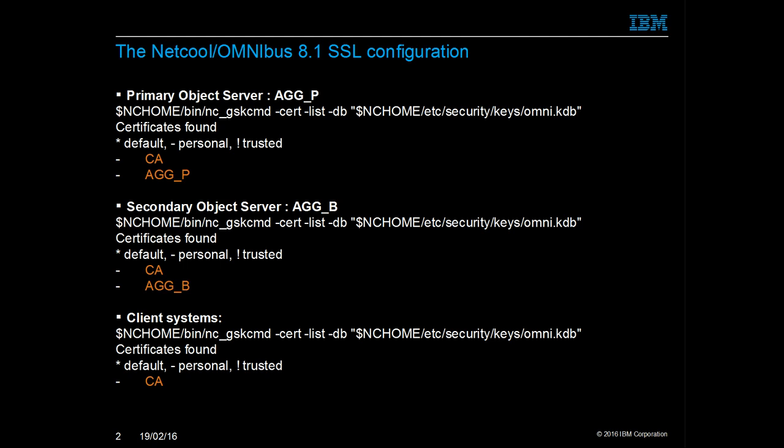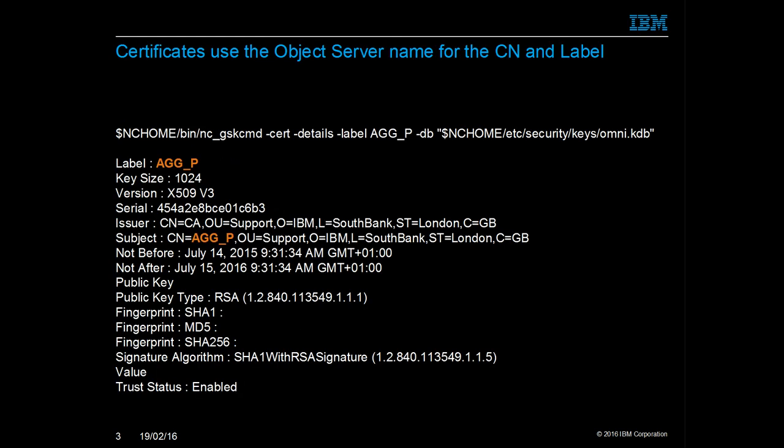In the keystore file, omni.kdb, the CA certificates will always be required, with the object server certificate being held for object server installations. In the primary object server certificate, both the label and common name use the object server's name. It is important to use a correct country code in the SSL certificates.